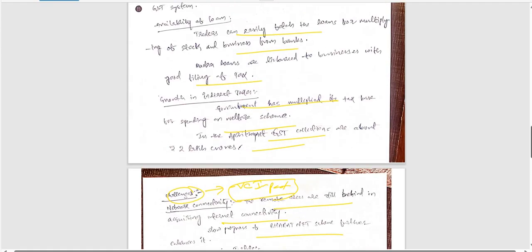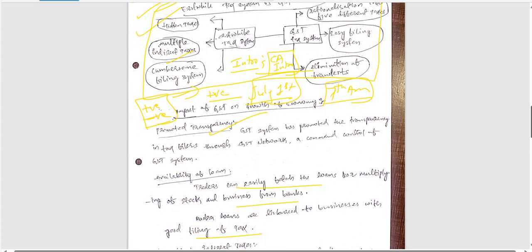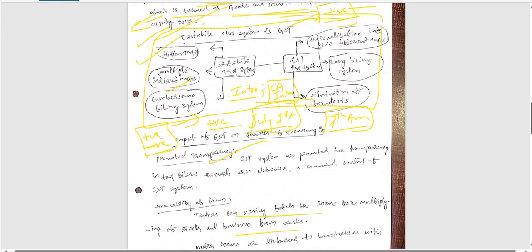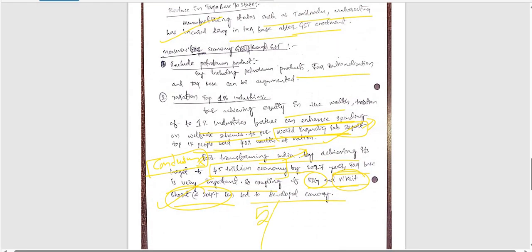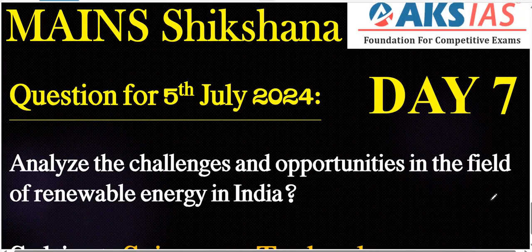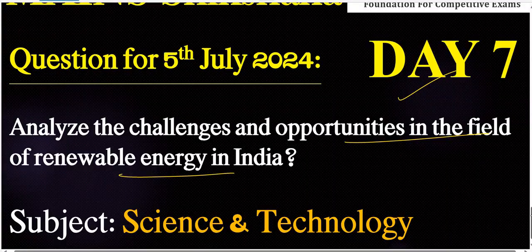Be careful — apart from content, we need to follow basic structure: approach, structure, flow, continuity, and connectivity. All these are necessary to write a good answer. For this answer, we can give 5 out of 10 marks. Keep writing — all the very best. The next question for 5th July 2024 (Day 7) is: Analyze the challenges and opportunities in the field of renewable energy in India — related to science and technology. Everyone should write answers and upload in the app provided in the description. Thank you very much, all the very best.